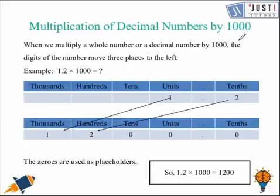Likewise, we can learn how can we multiply the decimal numbers by 1000. Again, because we've got three digits, three zeros in it, so we'll be shifting the digits three places to the left. So the units digit would land into thousands, the tenth digit would land into hundreds. And we'll be filling the blank spaces with the zero because that's a placeholder. So the new number is actually 1200.